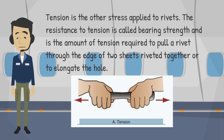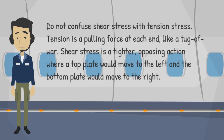Tension is the other stress applied to rivets. The resistance to tension is called bearing strength and is the amount of tension required to pull a rivet through the edge of two sheets riveted together or to elongate the hole. Do not confuse shear stress with tension stress. Tension is a pulling force at each end, like a tug of war. Shear stress is a tighter opposing action where a top plate would move to the left and the bottom plate would move to the right.